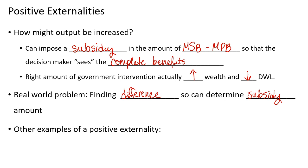Many things that are subsidized stem from arguments about positive externalities. This includes museums — art and educational — because other people can benefit from them. We protect historical things because appreciating and learning from them adds value. Education is another major example: the better educated people are, the more they can contribute to the economy. This justifies K-12 education and subsidized scholarships and loans for college, because one person being better educated helps others by making them productive workers who add to society.